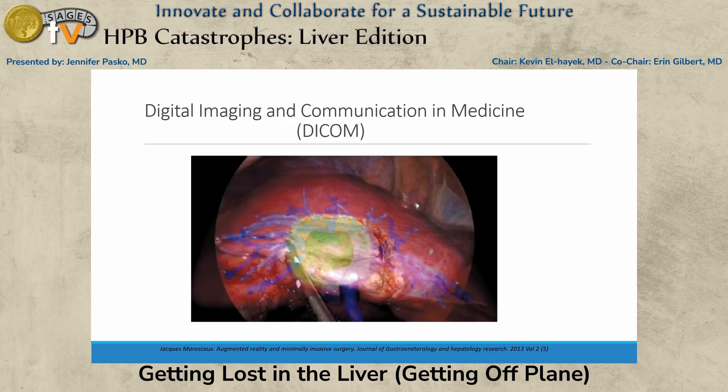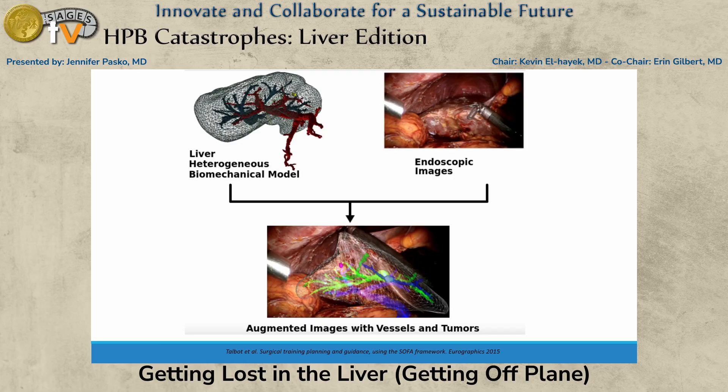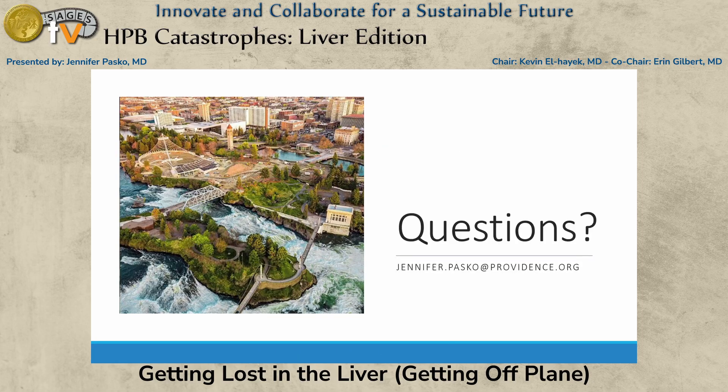So where are we going? I think this is the future — digital imaging and communication in medicine (DICOM). They take a CT image prior to the operation and place it interoperatively onto the robotic format. The problem right now is we mobilize the liver a lot, so how do you take a static image and keep it moving? But I think this is the future. I appreciate it — thank you.